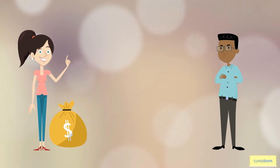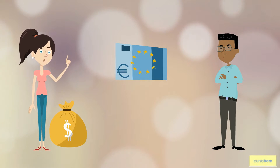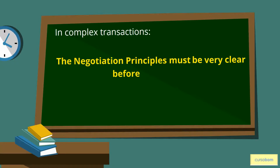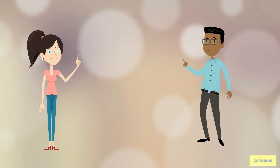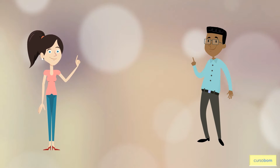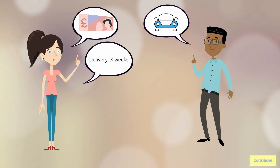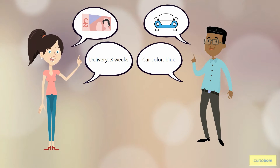In complex transactions that involve formal contracts and long-term agreements, having the negotiation principles crystal clear before starting negotiations is very important in order to avoid future problems. One way of guaranteeing that the negotiation parties adopt the same principles is listing them with the other negotiators. Everything that is not listed is supposed to be negotiable.